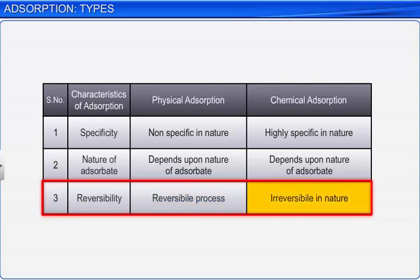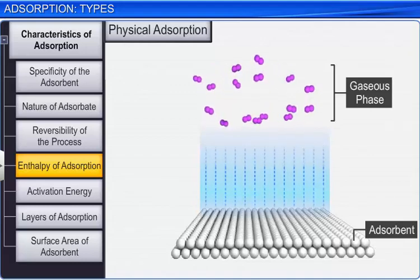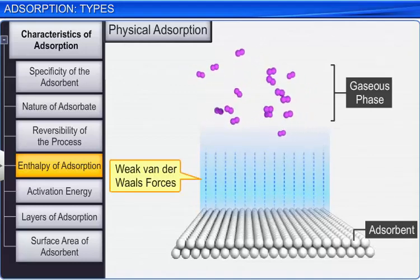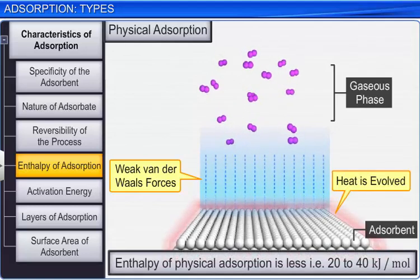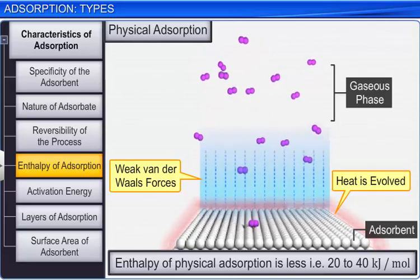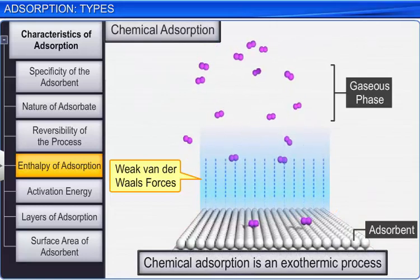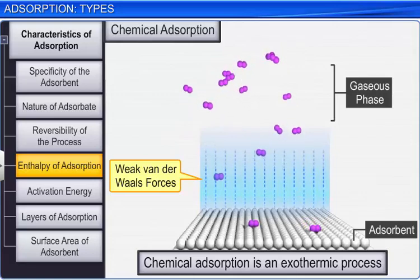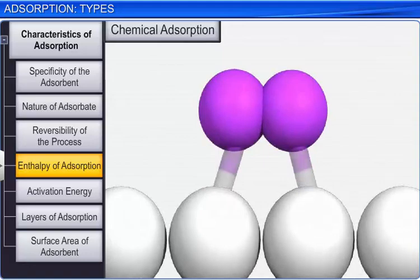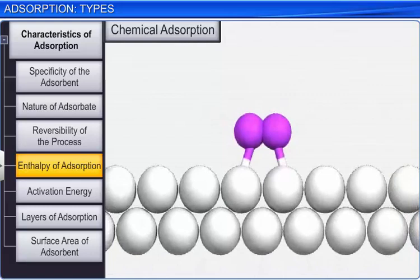In physical adsorption, since the Van der Waals forces of attraction are weak, the heat evolved or the enthalpy of adsorption is very little, around 20 to 40 kilojoules per mole. Chemical adsorption is also an exothermic process; however, surface compounds form and the forces involved are similar to chemical bonds, so a relatively high amount of heat is evolved, about 80 to 240 kilojoules per mole.